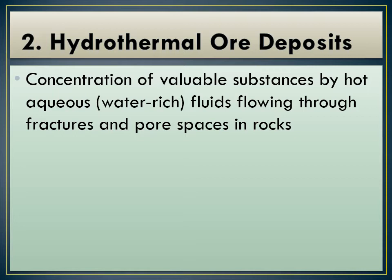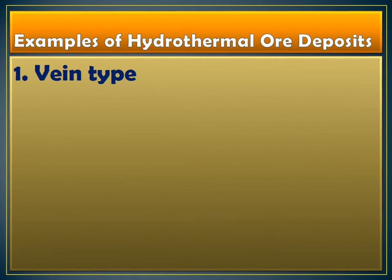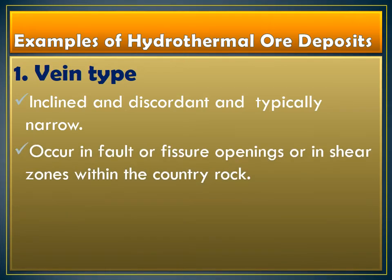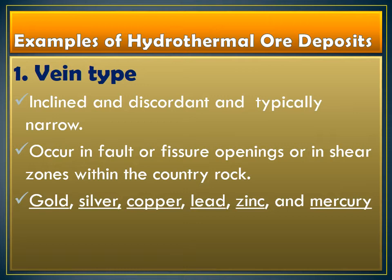Under hydrothermal ore deposits, the common type we usually see is the vein type hydrothermal ore. It has the following characteristics: they are inclined, discordant, and typically narrow. They also occur in fault or fracture openings or in shear zones within the country rock. The common hydrothermal vein deposits include gold, silver, copper, lead, zinc, and mercury.